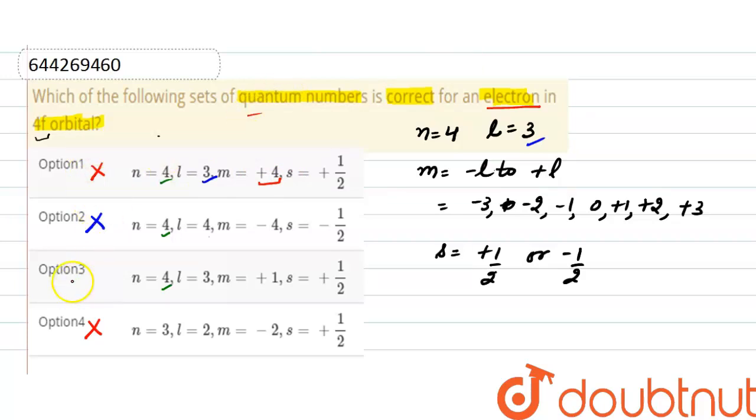And the correct quantum numbers are in option third, that is n equals to 4, l is 3, and m is plus 1. Yes it is possible and spin is plus half. Yes it can be plus half or it can be minus half. So the correct option is option third.